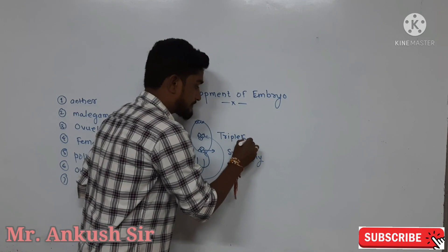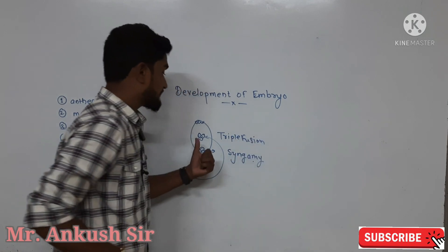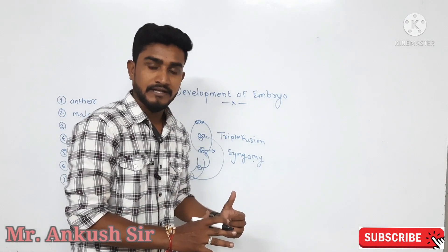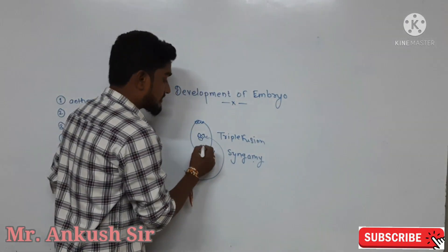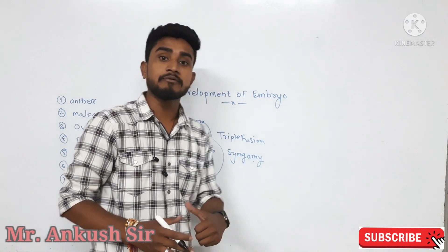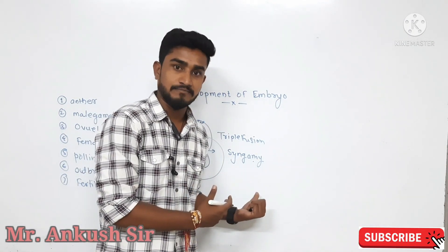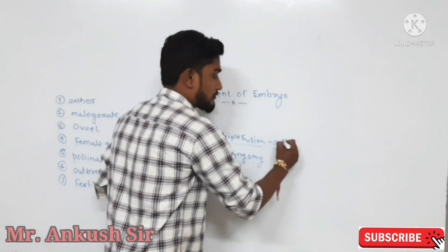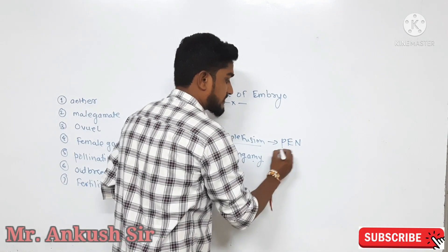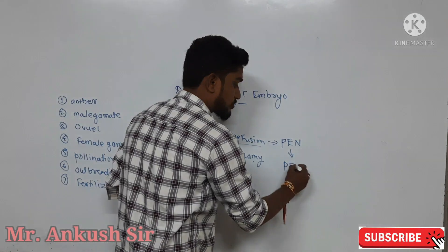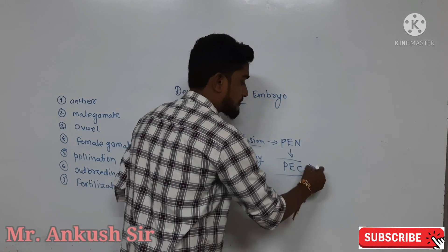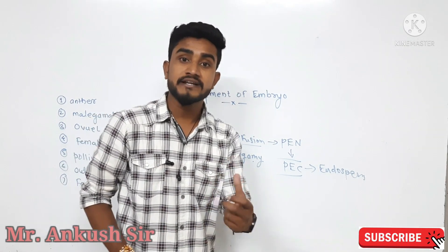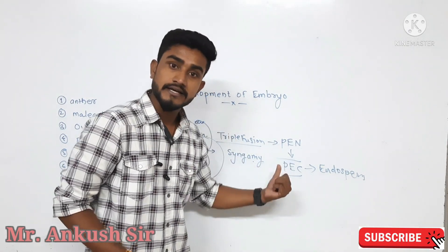Triple fusion. Why do we call it triple fusion? This is because the fusion involves three nuclei and results in a triploid. The treatment results in the primary endospermic nucleus, which then becomes the primary endospermic cells. The endospermic cells then form the endosperm.